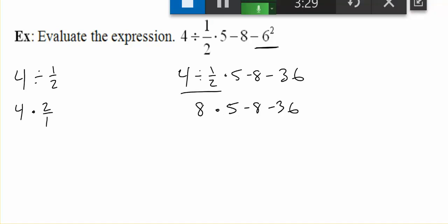Our next step is multiplication, so we're going to multiply 8 times 5 and get 40, subtract 8, subtract 36. 40 minus 8 is 32. 32 minus 36 makes negative 4.